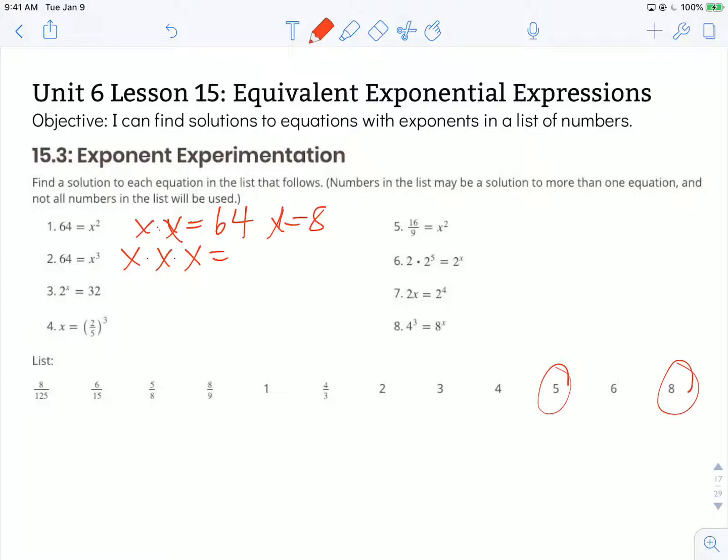What if I try 5? 5 times 5 is 25, and then 5 groups of 25 would be 25, 50, 75, 100, 125. That's too big.